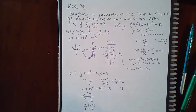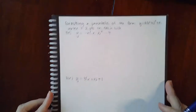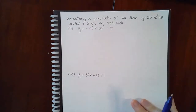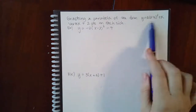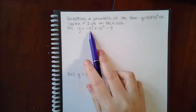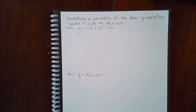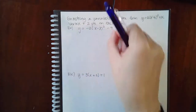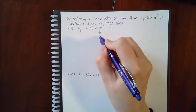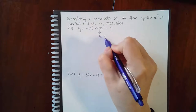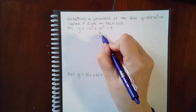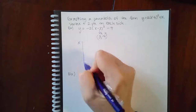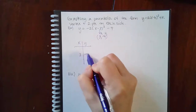Here is another problem where the equation is already in transformation form — a(x - h)² + k. This time there is an a value in the front. Since it's already set up for us, we don't have to find h and k; we just read them off. Remember: h takes the opposite sign, and k takes the exact same sign.